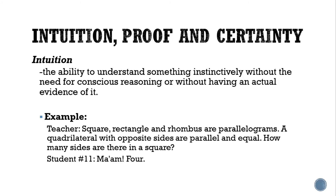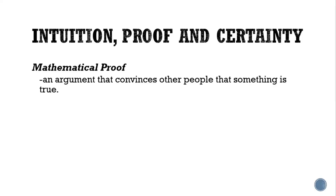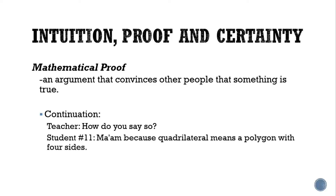Next is mathematical proof — it is an argument that convinces other people that something is true. Continuing the earlier example: the teacher asks, 'How do you say so?' The student answers, 'Because quadrilateral means a polygon with four sides.' Here, we are justifying the answer we have — that is mathematical proof. Evidence is what is needed.